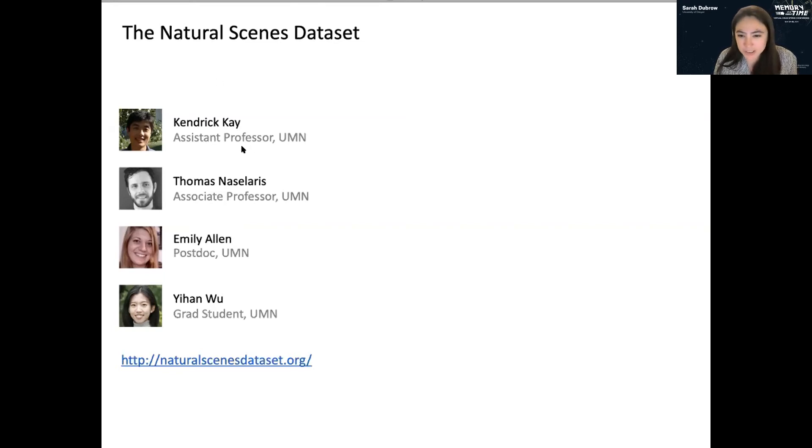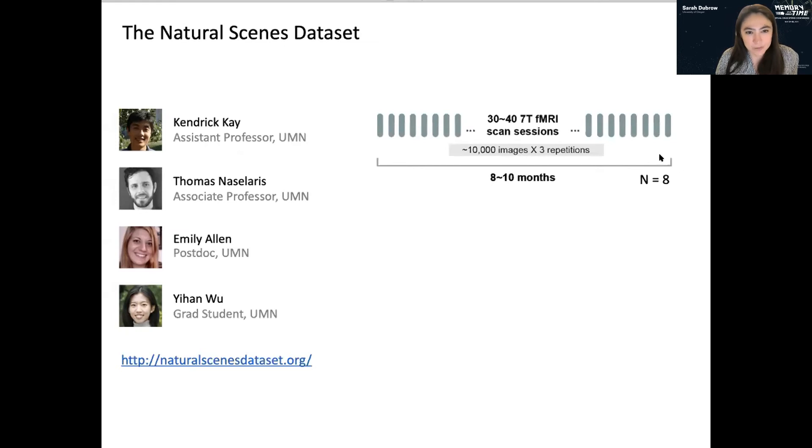So basically what they were interested in is bridging models of vision neuroscience to computer vision. And so what they needed was a lot of data and they chose to go the kind of massive sampling of relatively few subjects approach that Aryeh Tambini talked about earlier. So the experiment looks something like this. There were eight subjects that were scanned across eight to ten months and 30 to 40 sessions. So they were scanned approximately once a week, although there is variability in that.